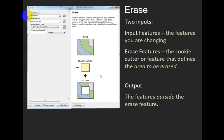The first input feature is the dataset that you want to change or erase. The second input feature is the erase feature that defines the area to be erased. It might help to look at the diagram and the tool help. The input feature is the dataset to be changed. The erase feature defines the shape you want to remove from the first input dataset. The new output will contain all of the areas outside of the erase feature.